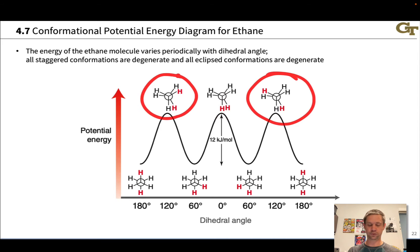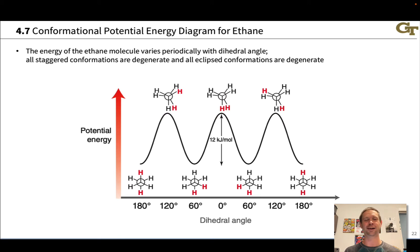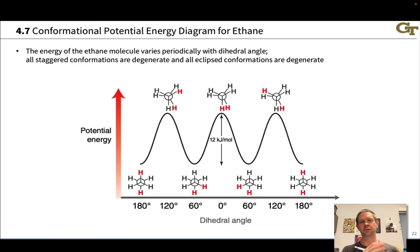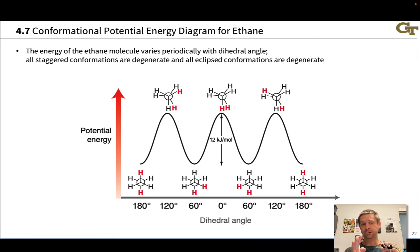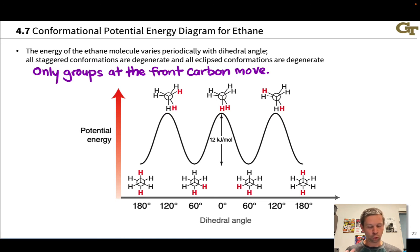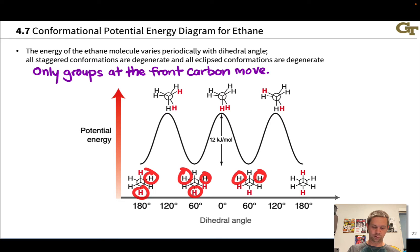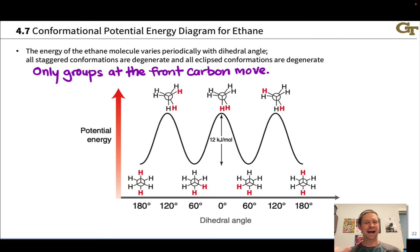At 120 degrees, we have eclipsed structures where the red C-H bonds are eclipsing other C-H bonds with black hydrogens. Let's start on the left and follow what's going on from left to right across the diagram. As we move left to right, visualize rotation about the carbon-carbon bond — specifically a torsion that moves the bonds of the front carbon with respect to the back. In these Newman projections, only the groups at the front carbon are moving; the Y-shape at the back carbon is maintained throughout the diagram.